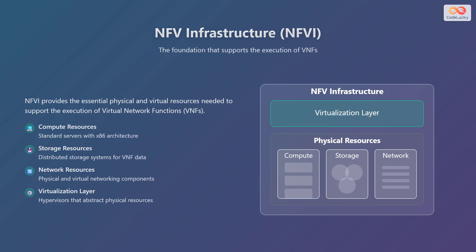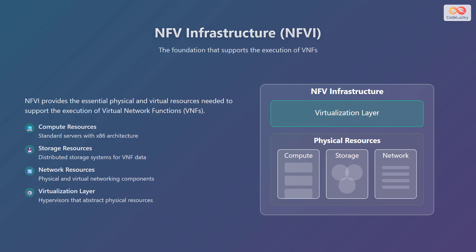NFV infrastructure, or NFVI, is the foundation that supports the execution of VNFs. NFVI provides the essential physical and virtual resources needed to support the execution of virtual network functions. NFVI consists of several key components: compute resources, which are standard servers with x86 architecture; storage resources, which are distributed storage systems for VNF data; network resources, which are physical and virtual networking components; and a virtualization layer, which are hypervisors that abstract physical resources. On the right side of the slide, we have a diagram of the NFV infrastructure showing the virtualization layer and physical resources such as compute, storage, and network.